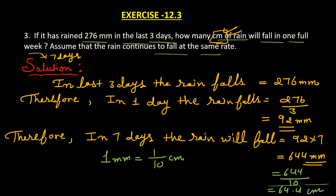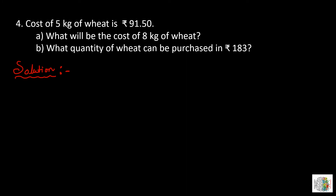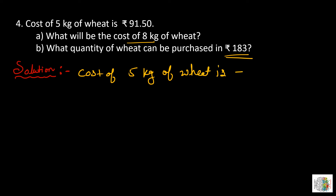So seven days mein kitna rainfall hoga — 64.4 cm. Now question number four: the cost of 5 kg of wheat is rupees 91.50. We will first find out the cost of 8 kg of wheat, and then what quantity of wheat can be purchased in rupees 183. In unitary method, hum sabse pehle 1 kg of wheat ka cost find out karenge, then 8 kg of wheat ka cost.